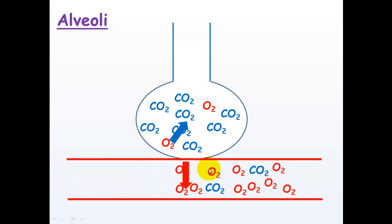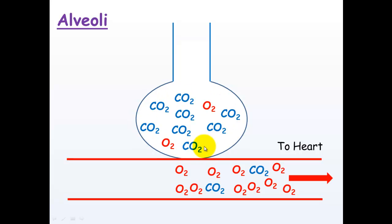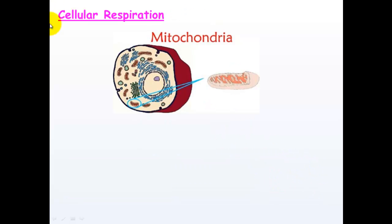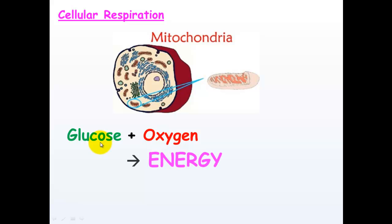So now the blood coming away from the lungs is going to be high in oxygen, and that goes back towards the heart to be pumped around the body. The lungs are now high in carbon dioxide, and we breathe out that carbon dioxide. This blood then goes back to the heart and then goes to cells. Remember, in cells we have this tiny organelle called mitochondria, and in the mitochondria glucose and oxygen react to make energy plus carbon dioxide and water — this is called cellular respiration, and this is where all of our cells get their energy.